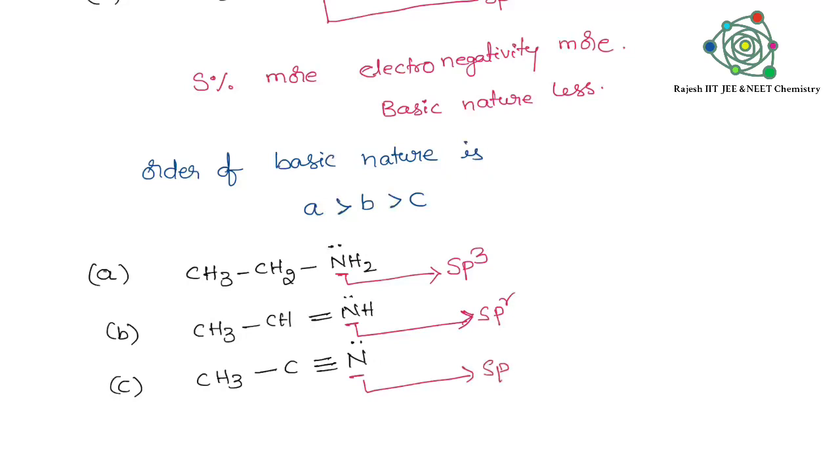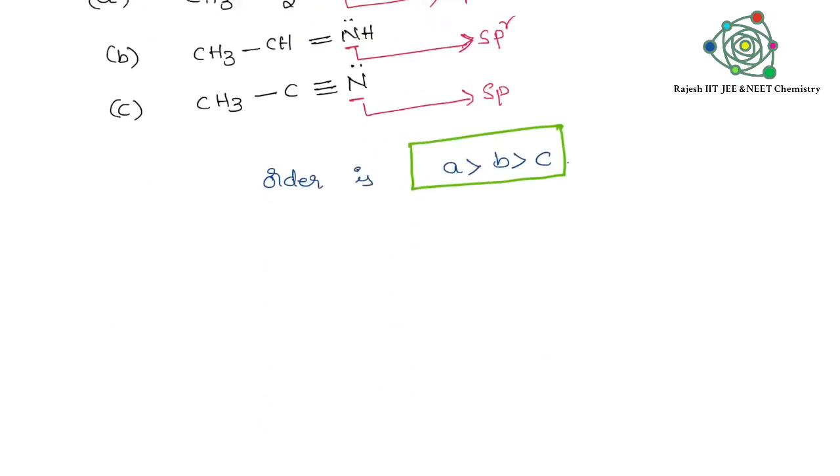Same as the above case, but we are focusing with respect to nitrogen. So same: s-character is more, electronegativity is more, basic nature is less. Here also, a is greater than b, b is greater than c.